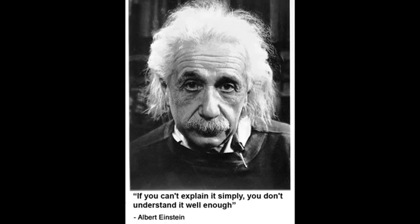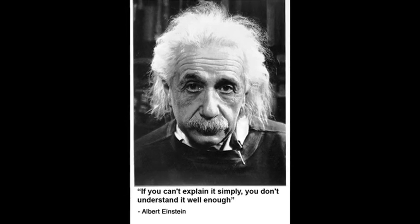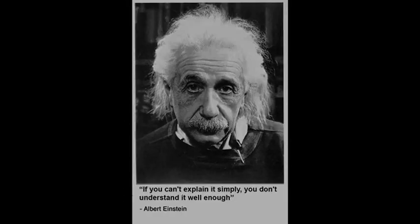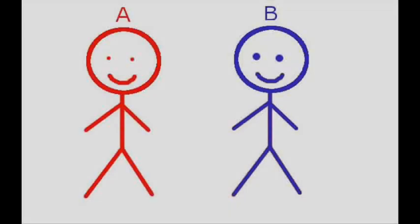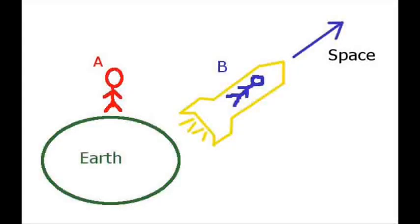My first question relates to Einstein's twins. We all know the story. There are twins on Earth. Twin A stays on Earth whilst twin B shoots off into space.